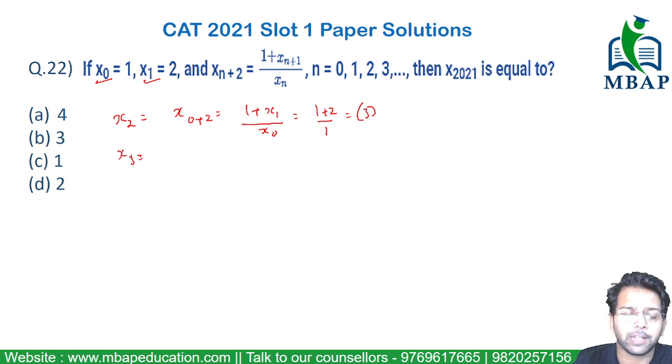Similarly, let's find the value of x₃. x₃ will be x₁₊₂, which will be 1 plus x₂ this time, divided by x₁. This value becomes x₂ you got as 3. So 1 plus 3 divided by 2 will be 4 by 2, which is equal to 2.